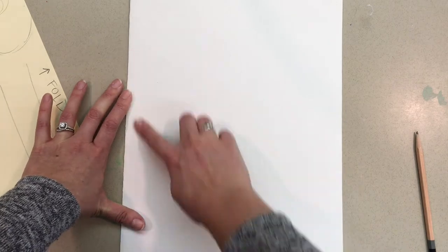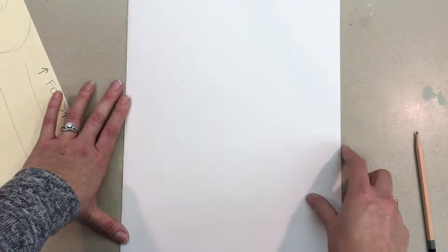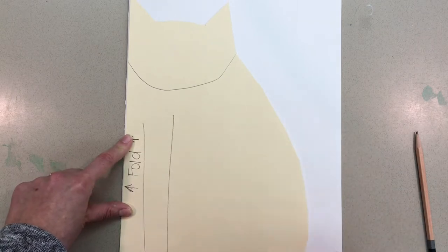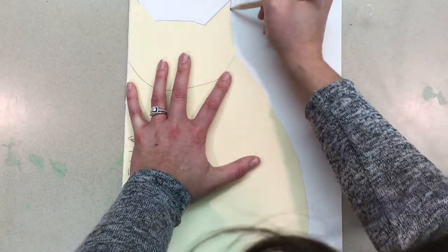Now flip your paper over. It's time to trace the back. The fold is now on the left and the opening is on the right. Line up your pattern, fold on the left, opening on the right.